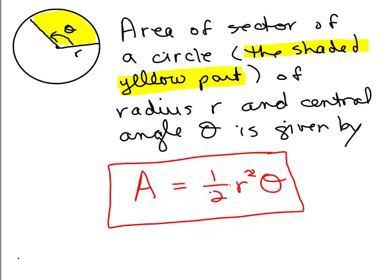The area of a sector of a circle of radius R and central angle theta is given by A equals 1 half R squared theta. Keep in mind, theta must be in radians for this to make any sense. And we're going to do problems finding the area of the sector of a circle in the next videos.